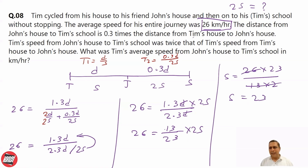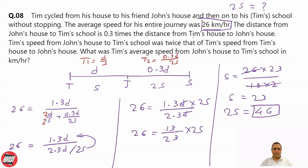What do we need? We need 2S. So 2S = 2 × 23 = 46. That is the answer.